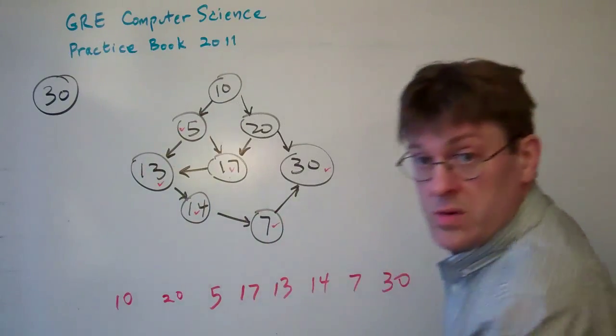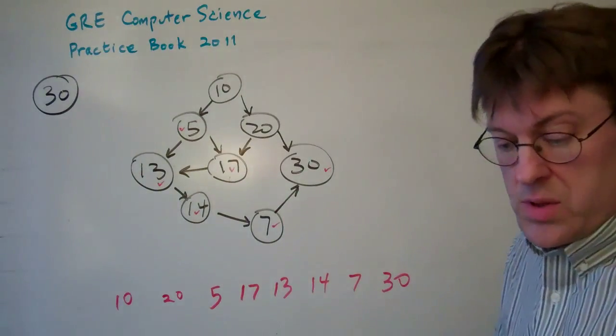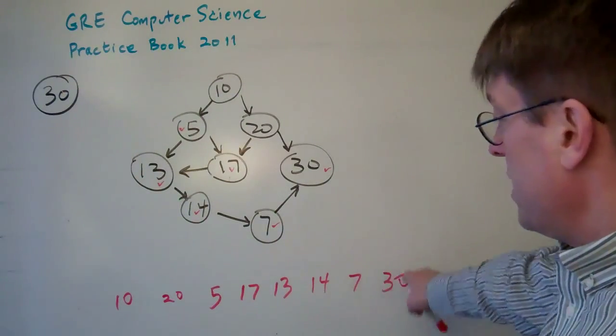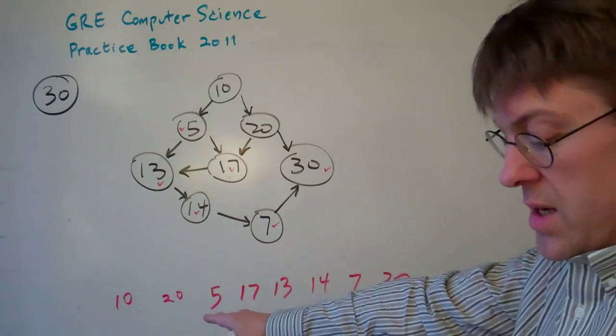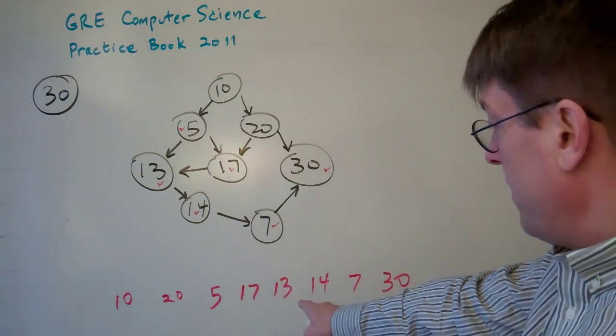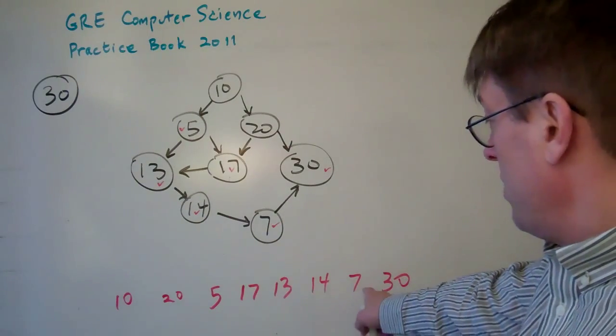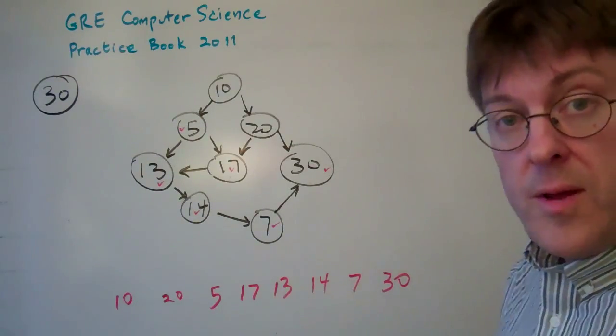That, my friends, is your topological sort. So the answer is E: 10, 20, 5, 17, 13, 14, 7, 30.